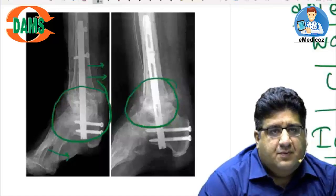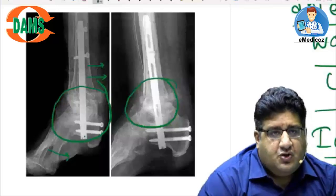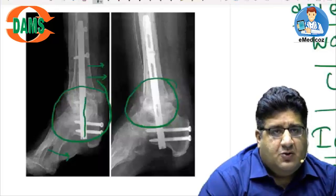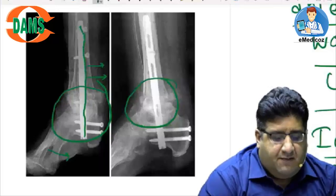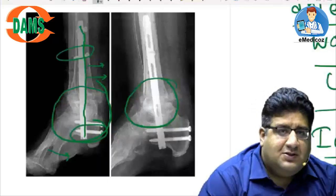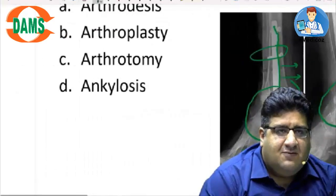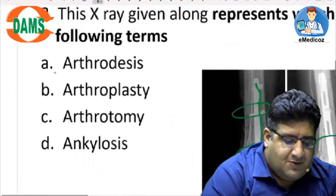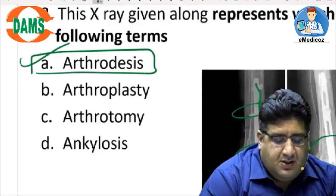Loss of posterior column is another cause, but what did the question actually ask? They've asked about the procedure done. We placed a retrocaneal nail spanning not only the subtalar joint but also the tibiotalar joint, crossing the ankle mortise and going up into the distal tibia, fixed with screws. We have fused certain joints — surgical fusion of a joint is called arthrodesis.